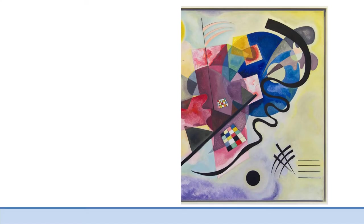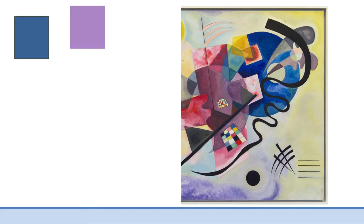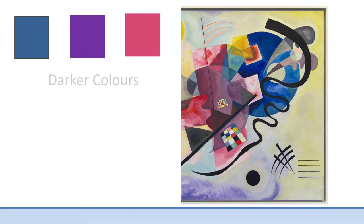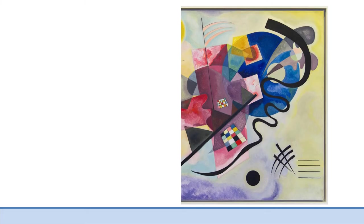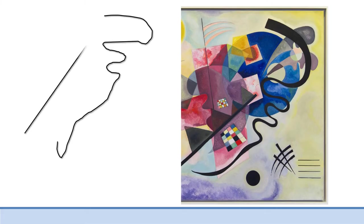Now let's look at the right side of the painting. Notice that Kandinsky has used darker colours on this side, in shades of blue, purple and pink. The shapes are more abstract and appear to be layered on top of one another. Black wiggly lines connect the shapes. This side of the painting feels darker and more crowded.